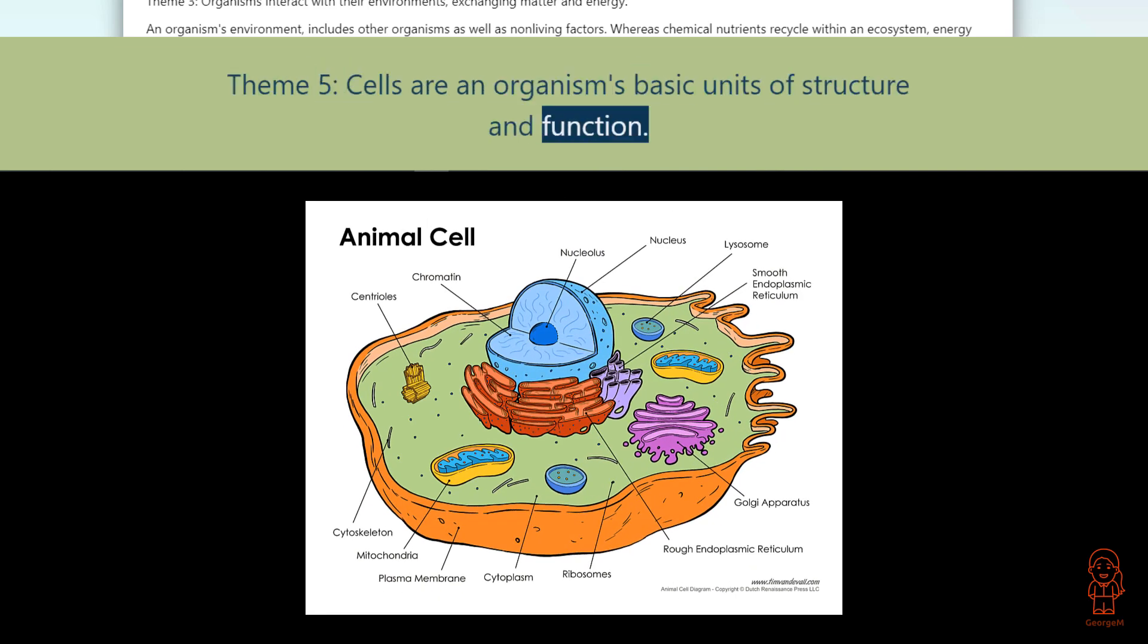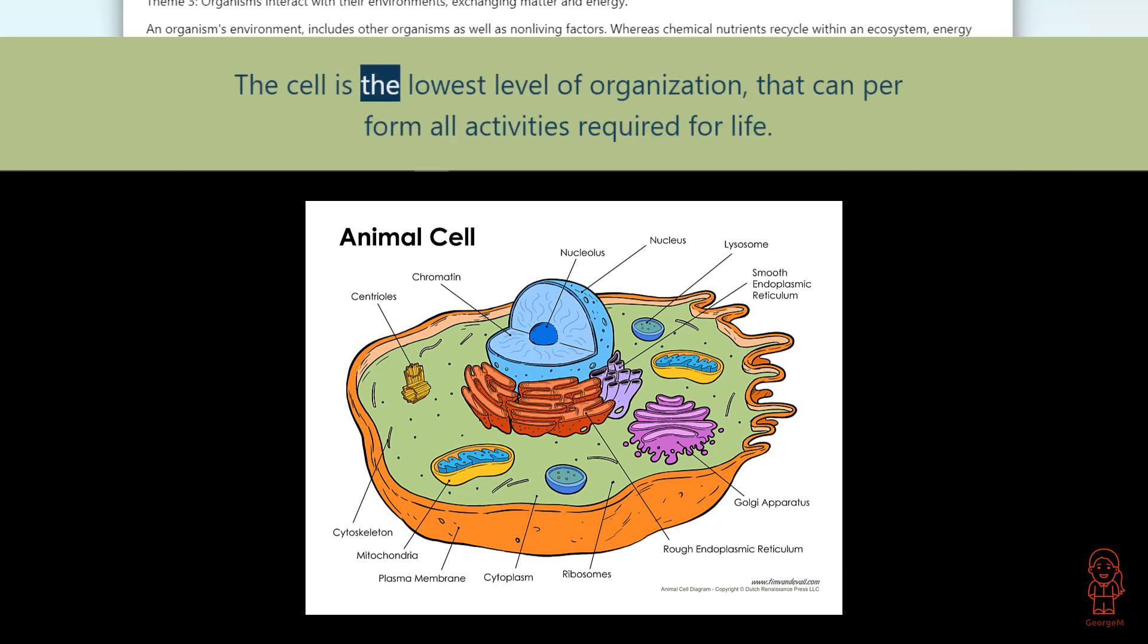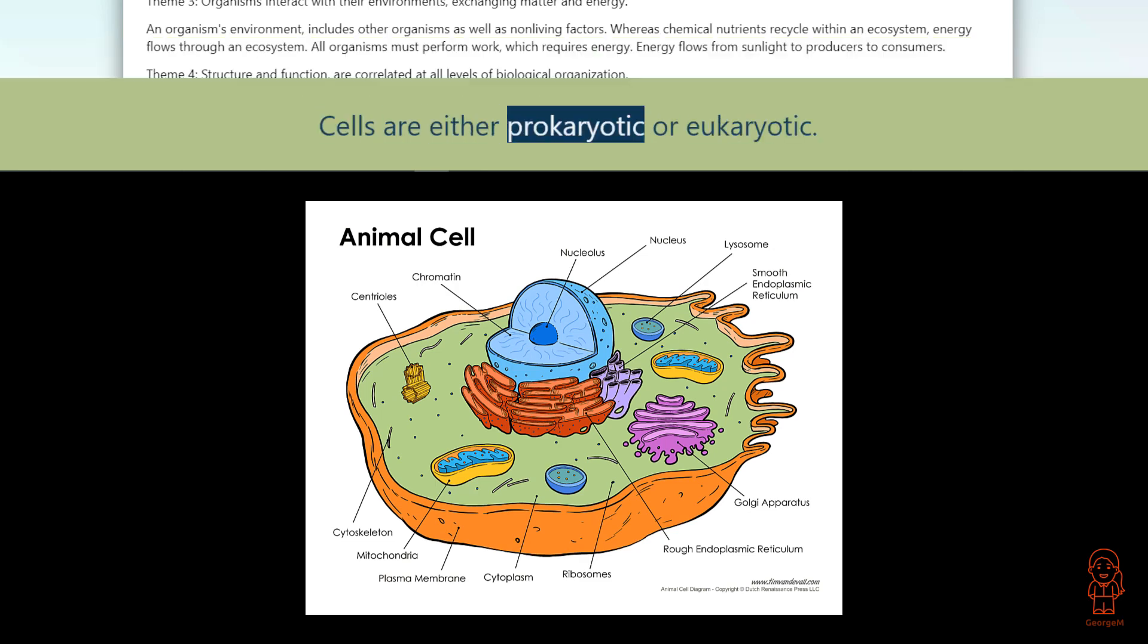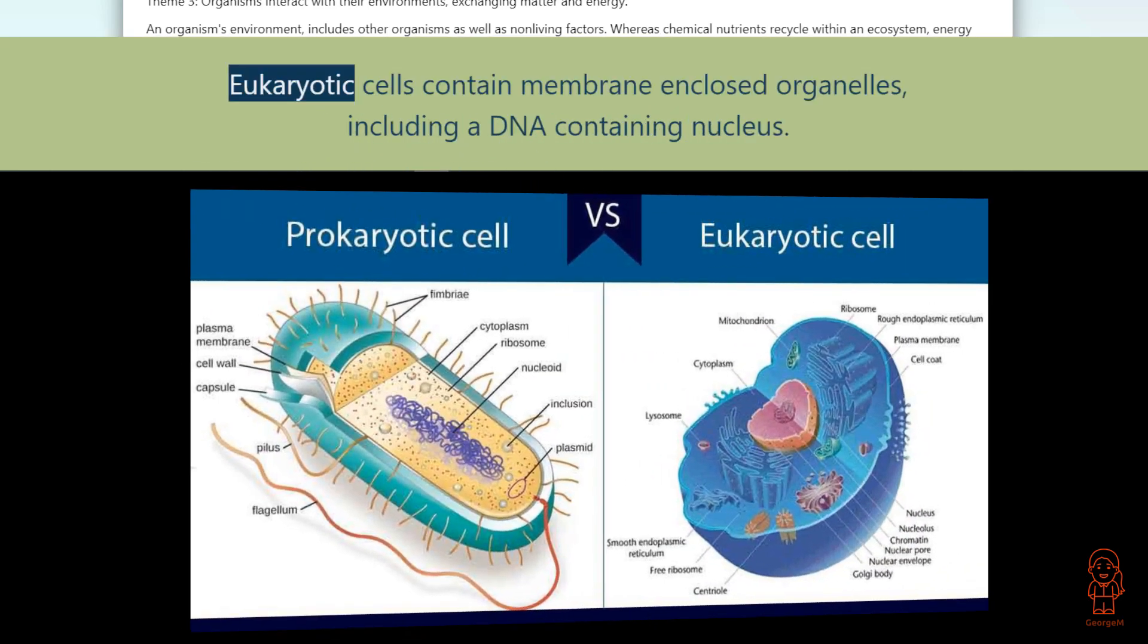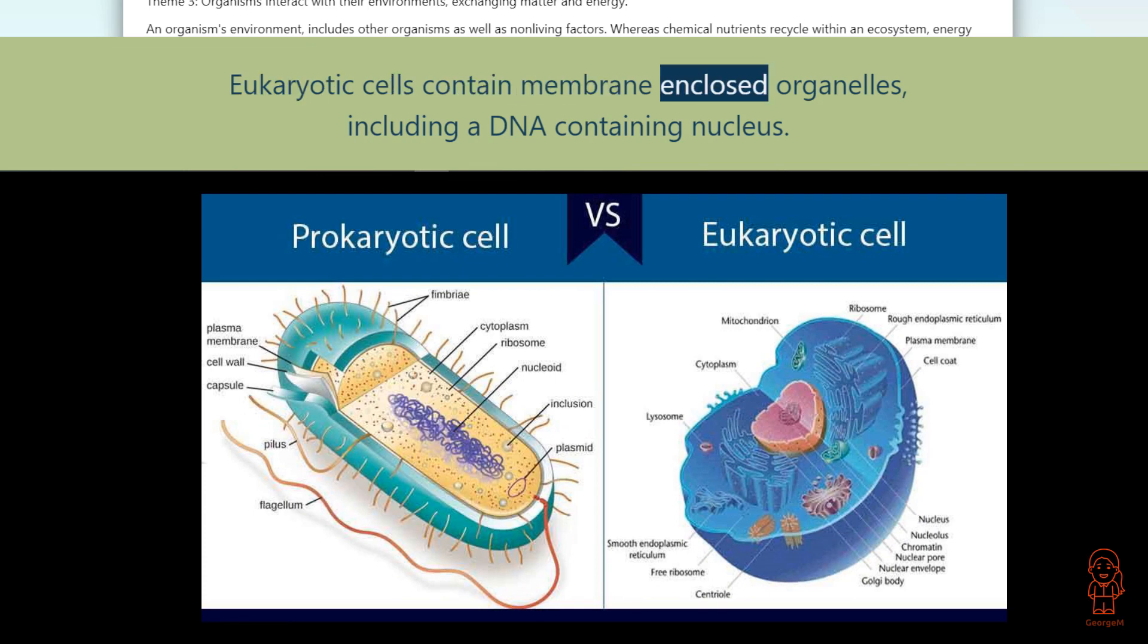The cell is the lowest level of organization that can perform all activities required for life. Cells are either prokaryotic or eukaryotic. Eukaryotic cells contain membrane-enclosed organelles including a DNA-containing nucleus. Prokaryotic cells lack such organelles.